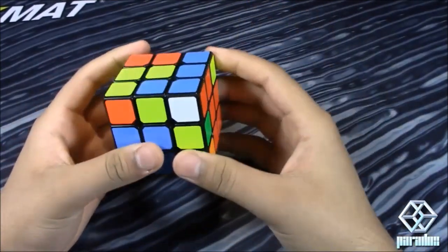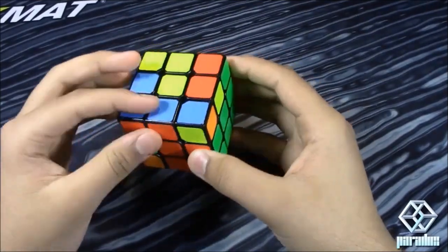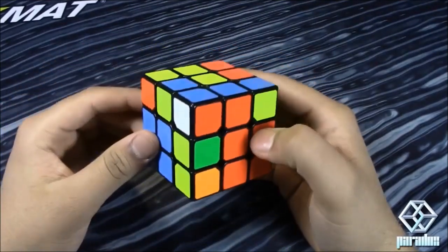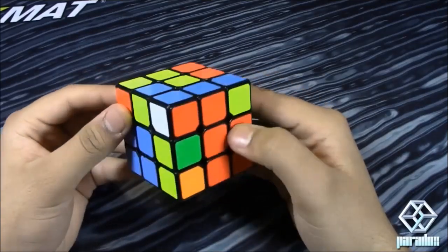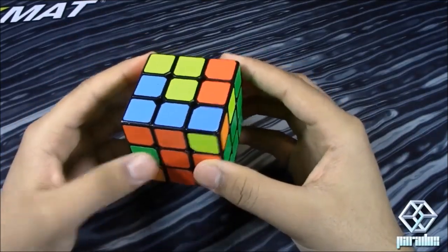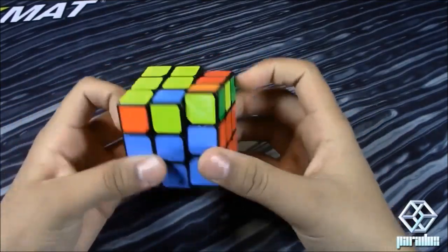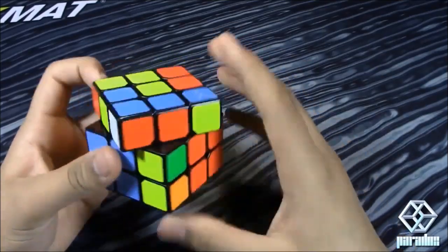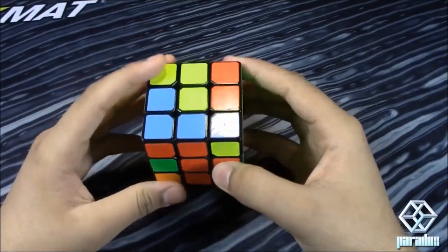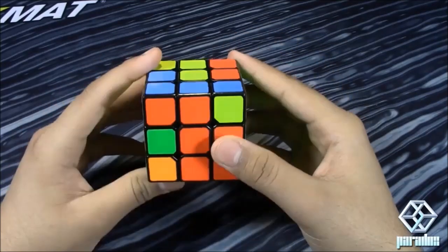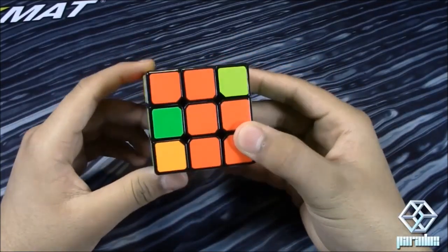And the next thing I'm going to show you is avoiding cube rotations for when you have a pair solved, like, for example, this. So if you want to insert this pair, most people would probably cube rotate like this and then insert it like that. But if you see a pair like this or you solved a pair and you need to insert it, there's three different things you could do here.